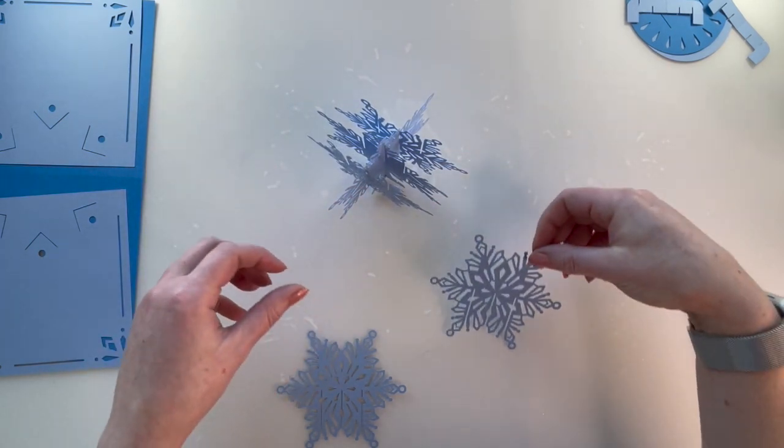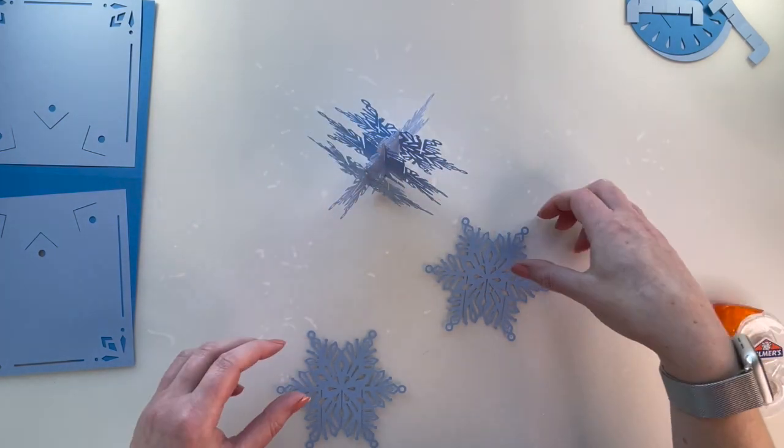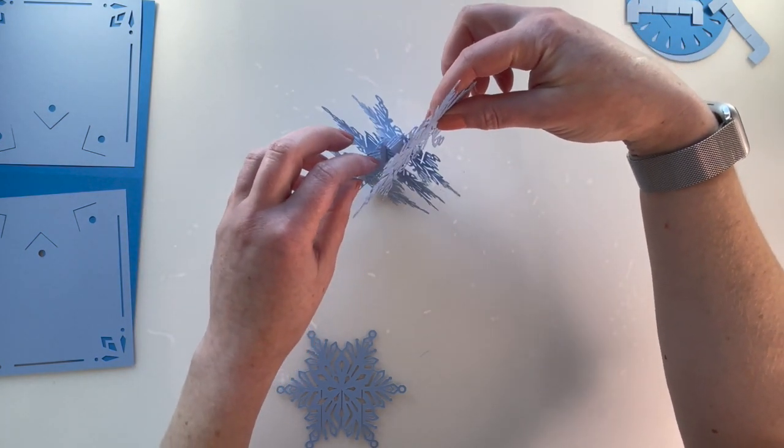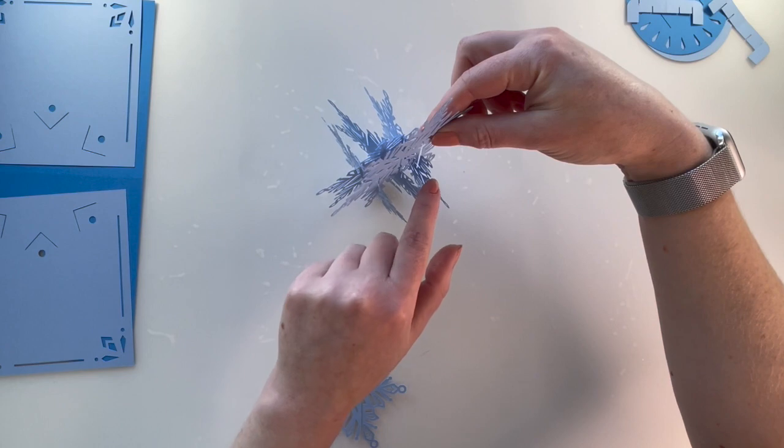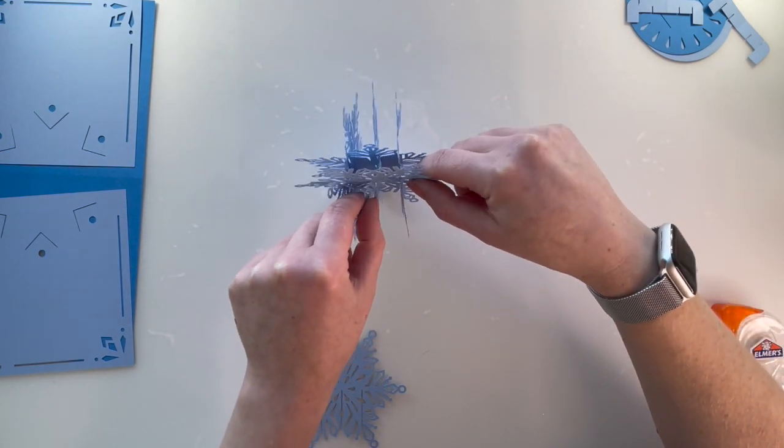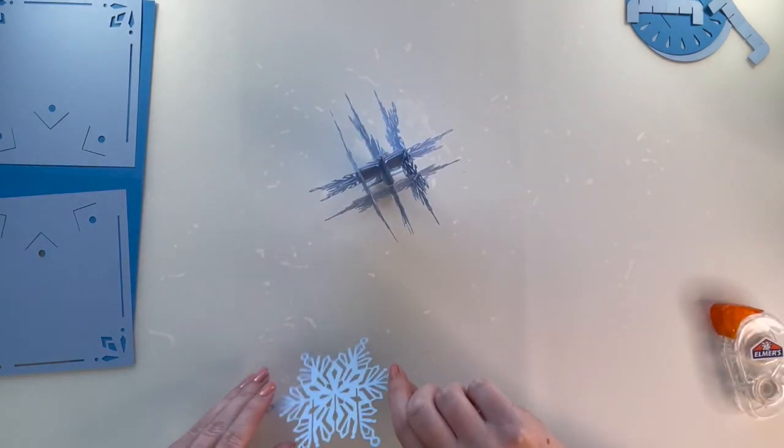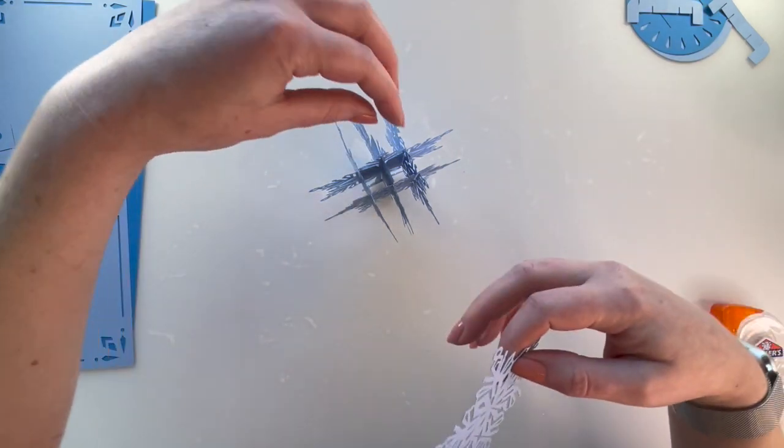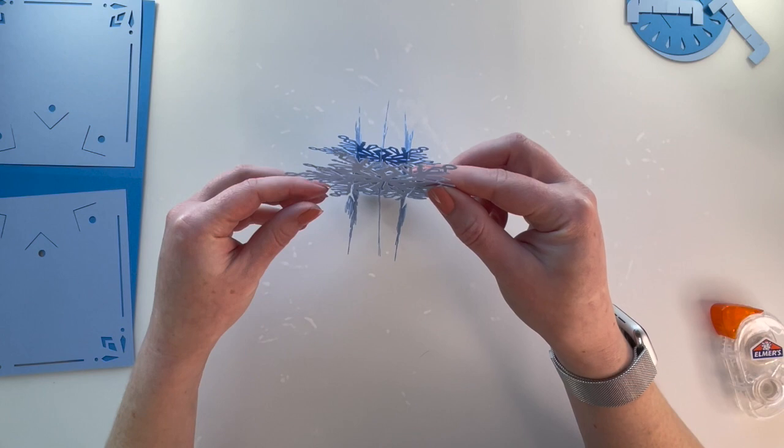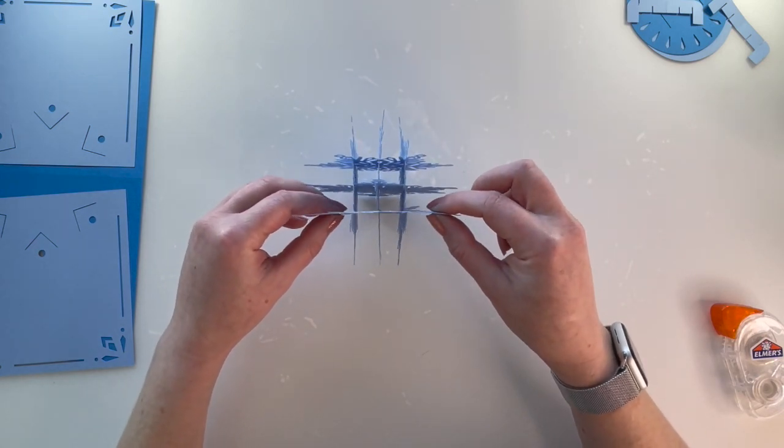You're going to take the other identical one and go to the opposite of where you put the first snowflake. Then you'll see that on this side I've got three slits, that side I have three slits. The last pieces perfectly line up, so just slide them on. If you've got to do some finagling to get them on, that's no problem.